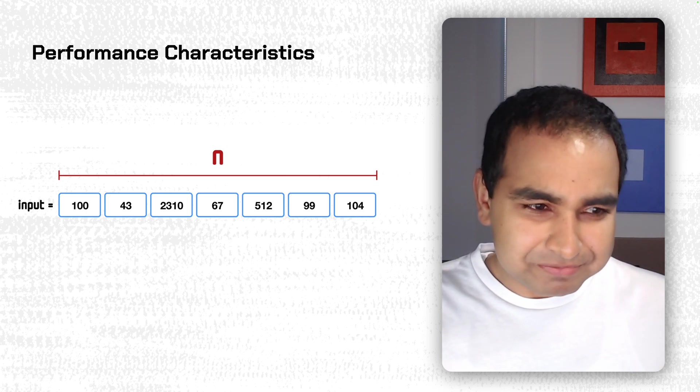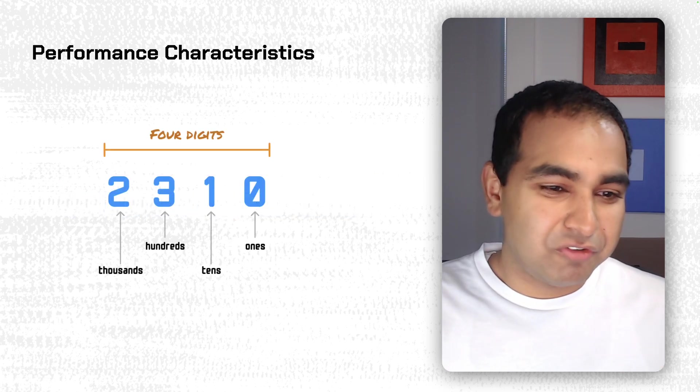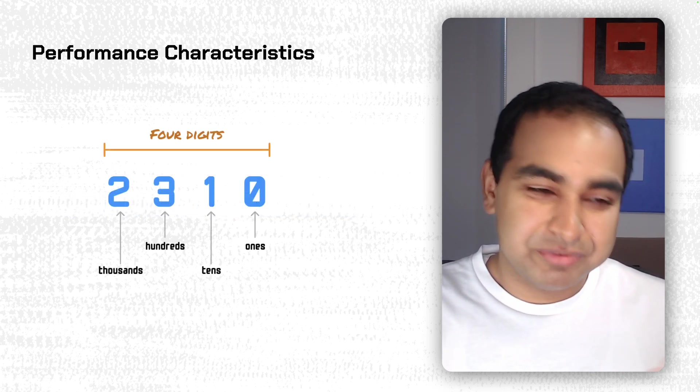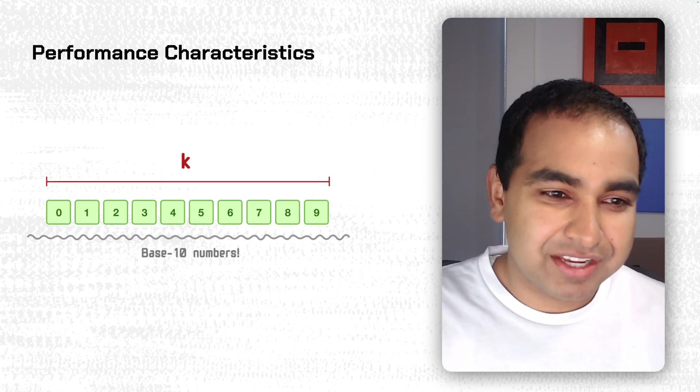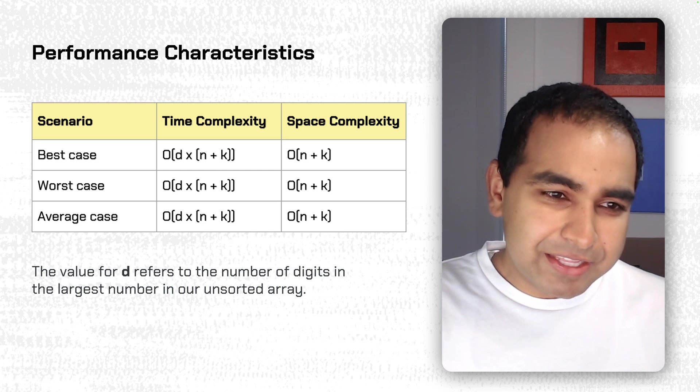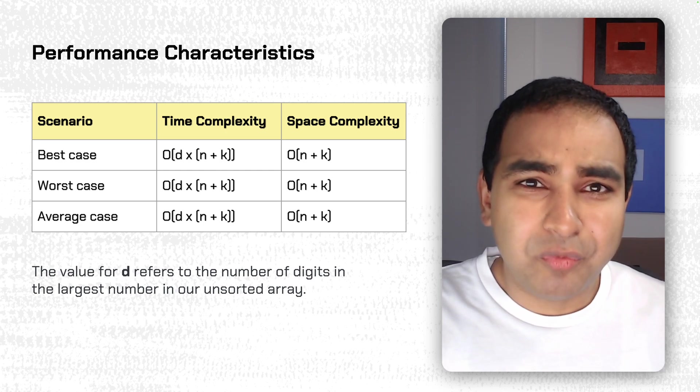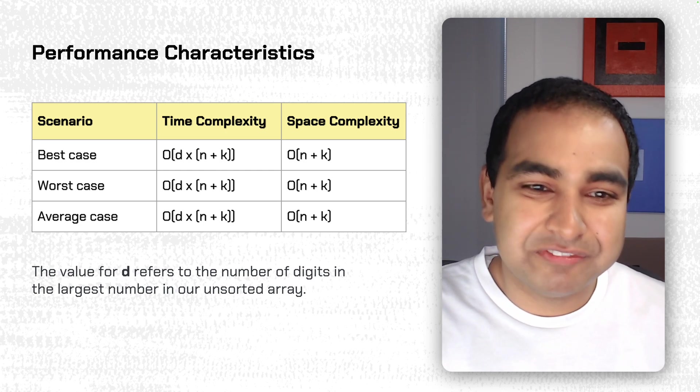So the input will be N, 7 values, 4 digits. This will be the value that you have to deal with, which will be 4. And then K is base 10 numbers, so it's 0 to 9. And so if you put all that together, you can see that Radix Sort is rather quite nice in how efficient it is.